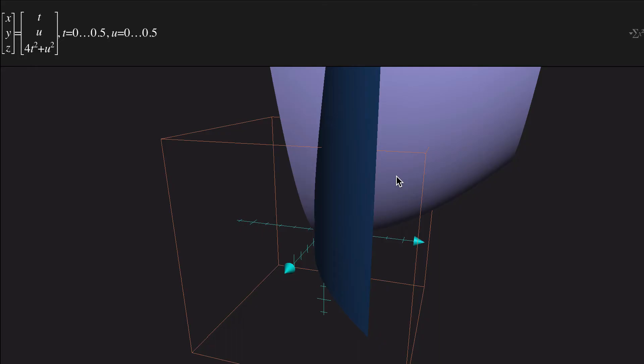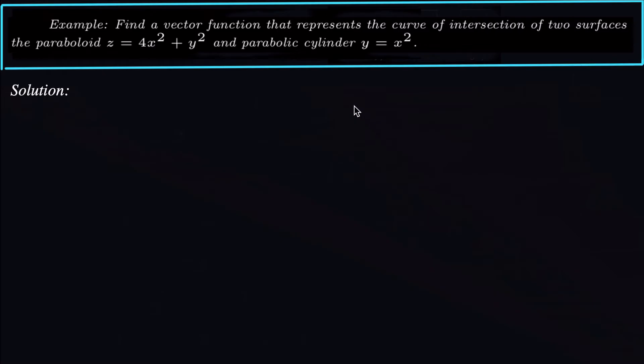So let's go back and try to figure out how to represent this curve of intersection with a vector function. Alright, so we've got y as a function of x, and then we can also then write z as a function of x by substituting whatever y is right here.